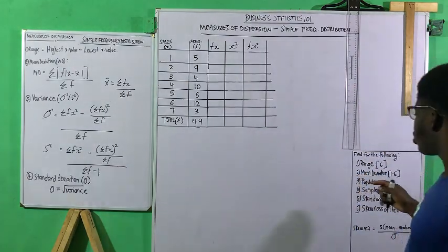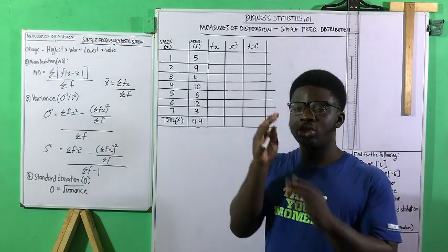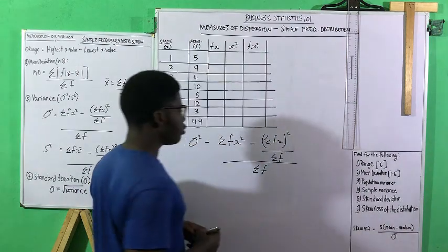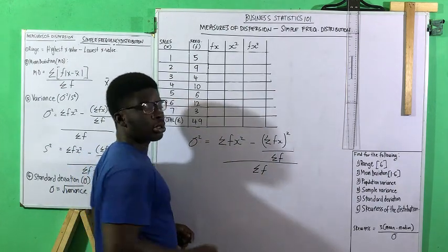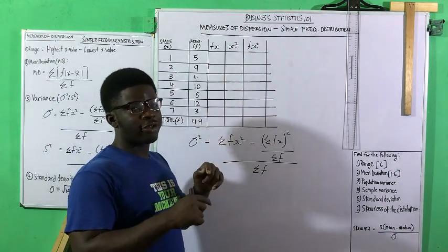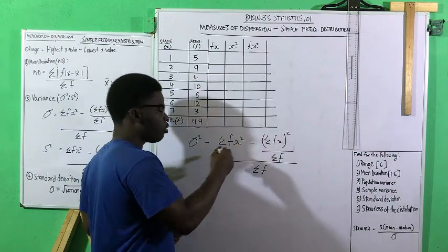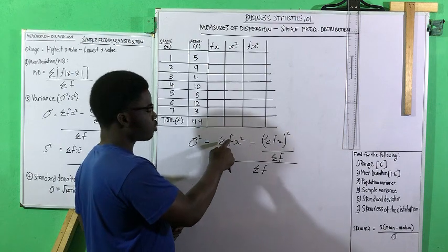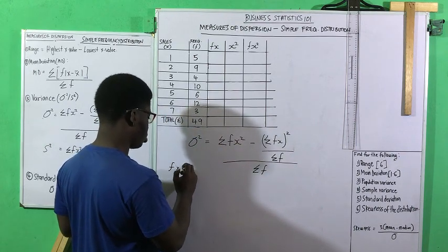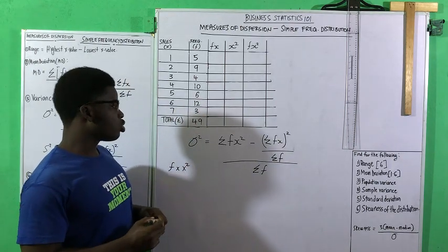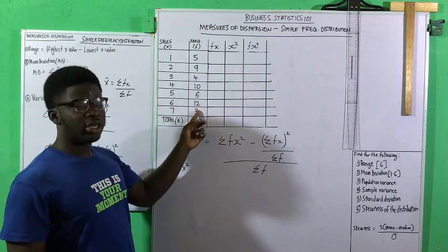To continue, we will now solve for the variance — starting with the population variance. First step: always write your formula down. Notice what is the difference between sigma fx-squared and sigma fx, squared. In the first one, it is sigma f times x-squared — so in algebra terms, you multiply the frequency by x-squared. These are two separate operations.